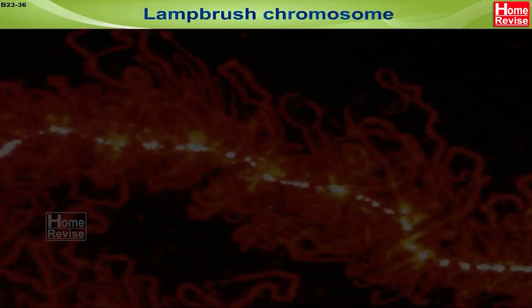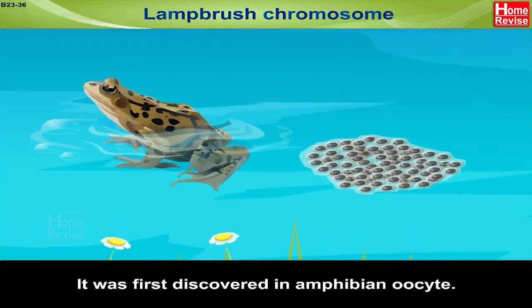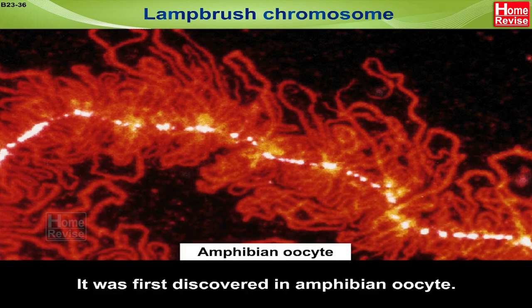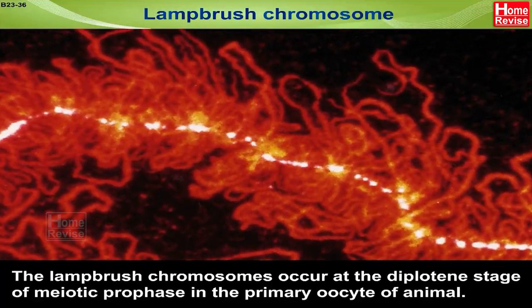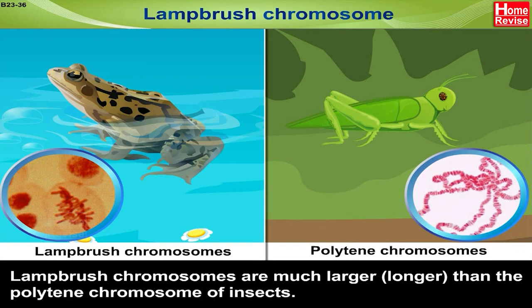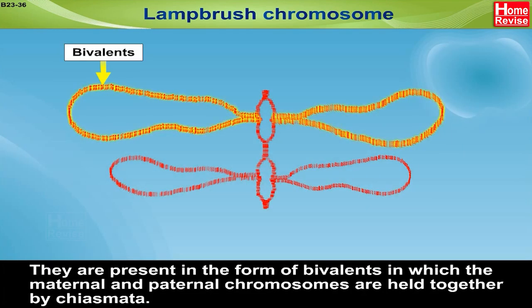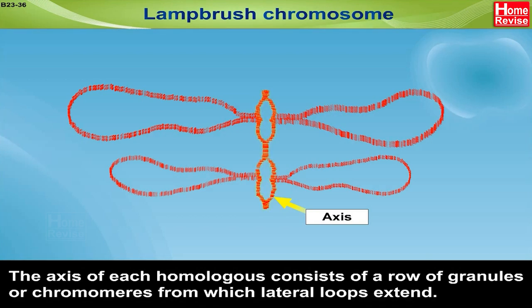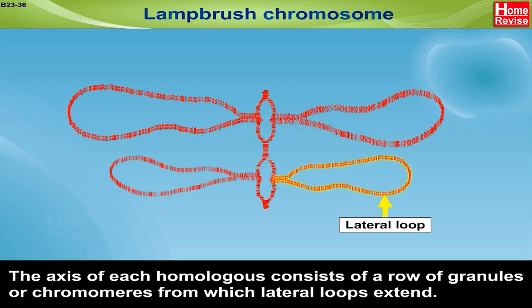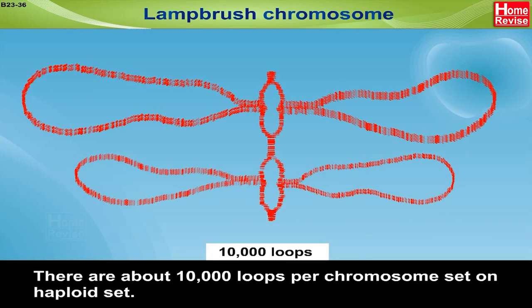Chromosome puffs, or Balbiani rings, are the swelling of bands in polytene chromosomes. Lampbrush chromosomes were first discovered in amphibian oocytes. They occur at the diplotene stage of meiotic prophase in the primary oocyte of animals, and are much larger than the polytene chromosomes of insects. They are present in the form of bivalents, in which maternal and paternal chromosomes are held together by chiasmata. The axis of each homologue consists of a row of granules, or chromomeres, from which lateral loops extend. There are about 10,000 loops per haploid chromosome set.